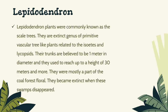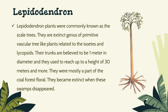Lepidodendron. Lepidodendron plants were commonly known as the scale trees. They are an extinct genus of primitive vascular tree-like plants related to the isoetes and lycopsids. Their trunks are believed to be 1 meter in diameter and they used to reach up to a height of 30 meters and more. They were mostly a part of the coal forest flora and became extinct when these swamps disappeared.